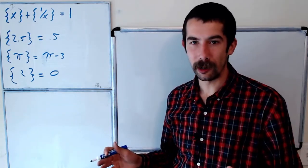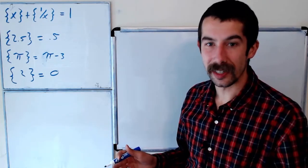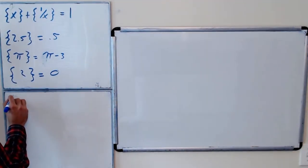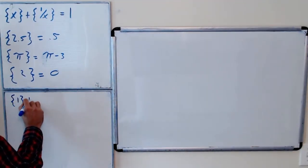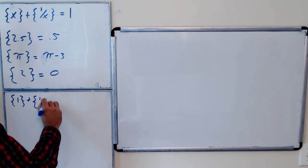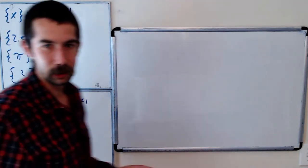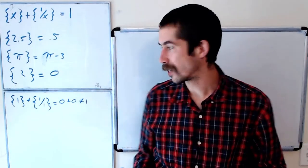All right so the first thing we should note is that x equals 1 is not a solution. Right so if we tried bracket 1 plus bracket 1 over 1 that's just 0 plus 0 which is not equal to 1. So x equals 1 is not a solution.